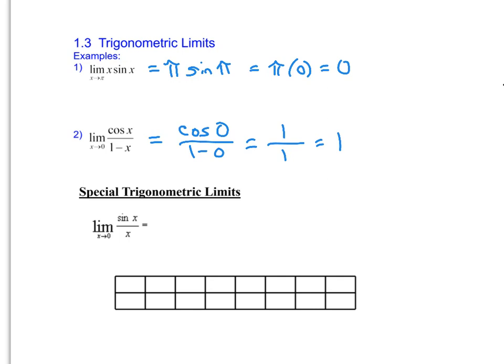Now we're going to see that sometimes we're not going to be able to do direct substitution. Let's take a look at the limit as x approaches 0 of sine of x over x. Substituting 0, we get sine of 0 over 0, which is 0 over 0 — that's our indeterminate form. That tells me I need to use another method to solve this limit.